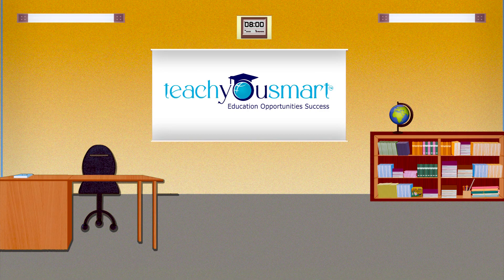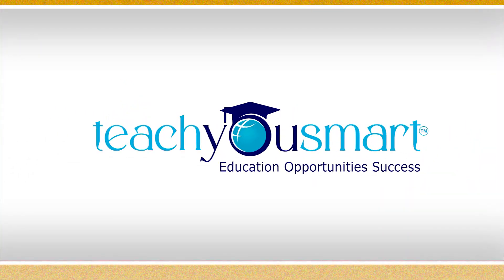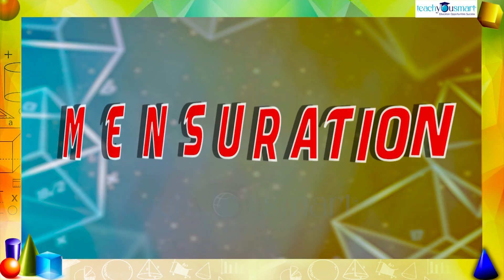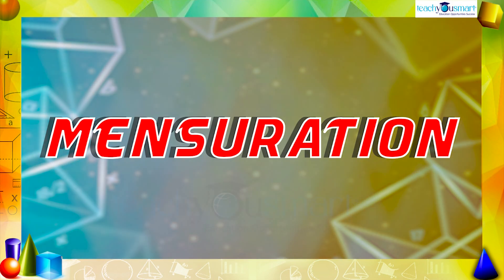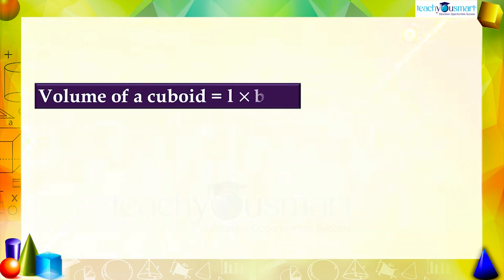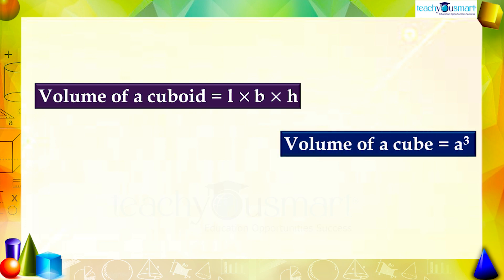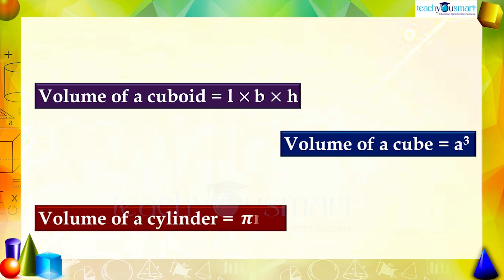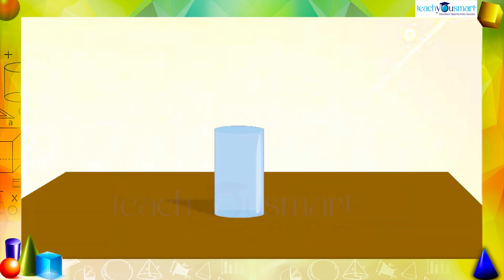Hello students, welcome to Teach You Smart. Let's continue our journey through mensuration. We know that the volume of a cuboid is L multiplied by B multiplied by H, the volume of a cube is A cubed, and the volume of a cylinder is pi r squared h. Look at this glass — it is in the shape of a cylinder.